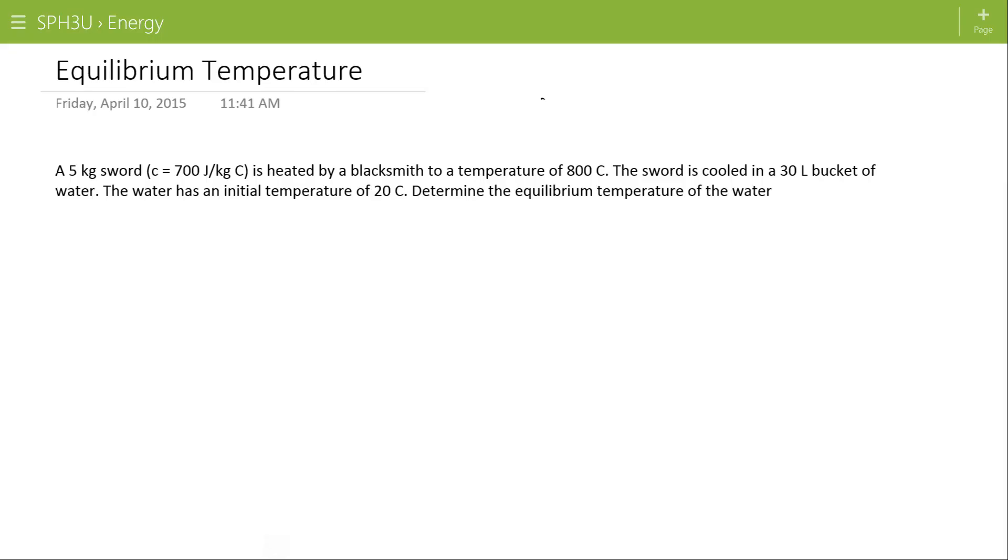Okay, this video is going to illustrate how to do an equilibrium temperature calculation. Here we're going to have a five kilogram sword being heated by a blacksmith to a temperature of 800 degrees Celsius. The sword is cooled in a 30 liter bucket of water. The water has initial temperature of 20 degrees C, determine the equilibrium temperature.